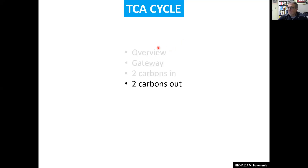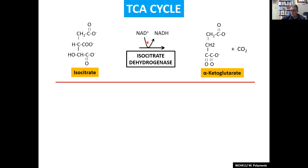Hi there. We continue with the next TCA cycle video — how the two carbons that came in from acetyl-CoA and pyruvate dehydrogenase will come out. The first enzyme we're going to see is isocitrate dehydrogenase. It takes isocitrate and removes one carbon to make alpha-ketoglutarate.